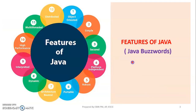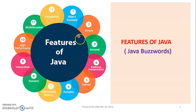Now let's look at the Features of Java, also called Java Buzzwords. Java is an Object-Oriented Language, Simple Language, Secured Language, Platform Independent, Robust, Portable, Architecture Neutral, Dynamic Language, Interpreted Language, High Performance Language, Multi-Threading Language, and Distributed Language.